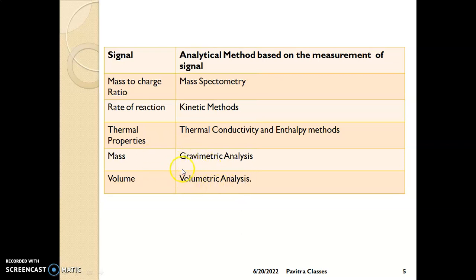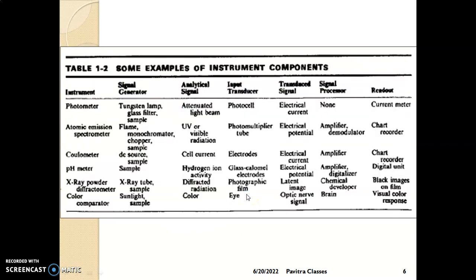Instrumental methods later came into existence. In every analytical instrument, there are components: a signal generator, analytical signal carrier, input transducer, transduced signal, signal processor, and readout. Examples of analytical instruments include a photometer, AES, colorimeter, pH meter, X-ray powder diffractometer, and color comparator. For each instrument, the analytical signals, input transducers, and transduced signals are listed.